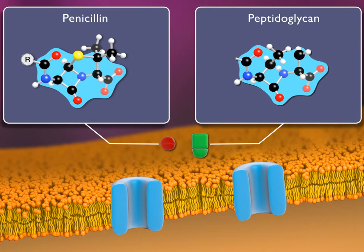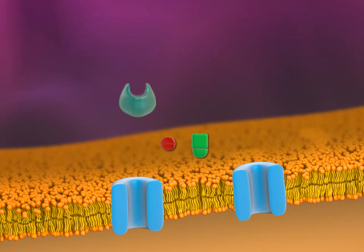Penicillin's shape is similar to that of peptidoglycan, which allows penicillin to bind to and inactivate the transpeptidase enzyme, like shutting down the factory.